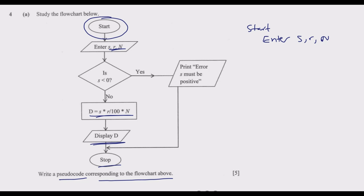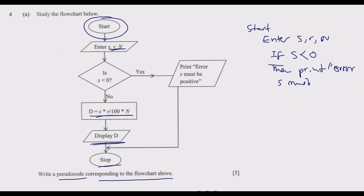Then we need to do a conditional test. IF s is less than zero, then PRINT 'Error: s must be positive.' Remember here we do the first indent, then the second — these are on the same line. That is what you need to observe.